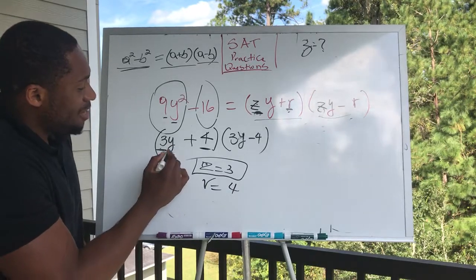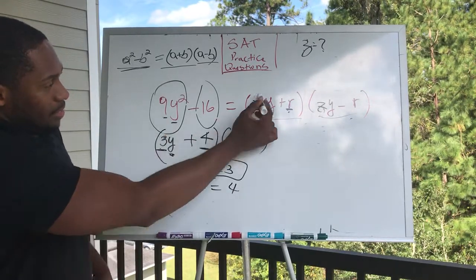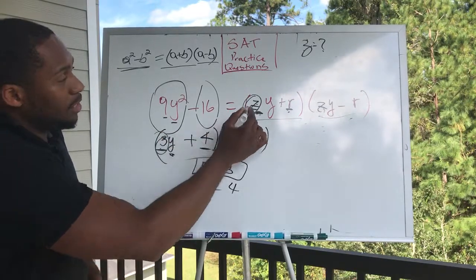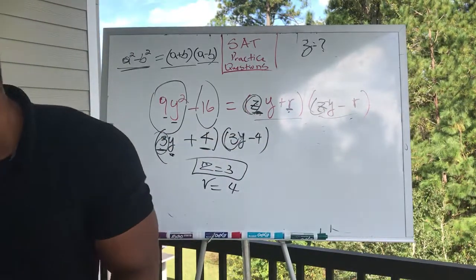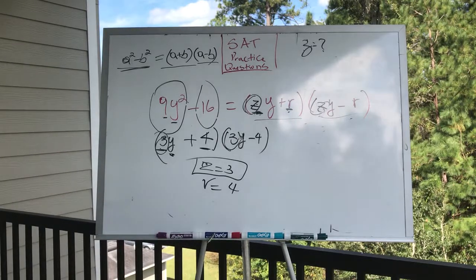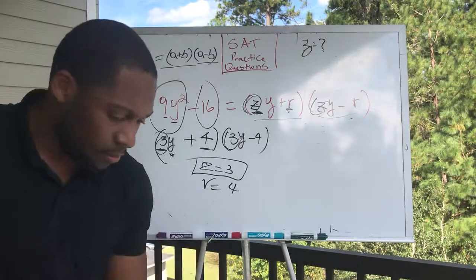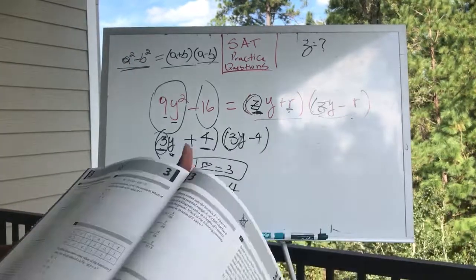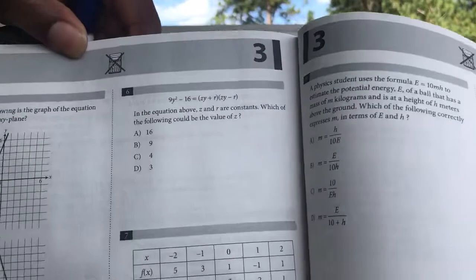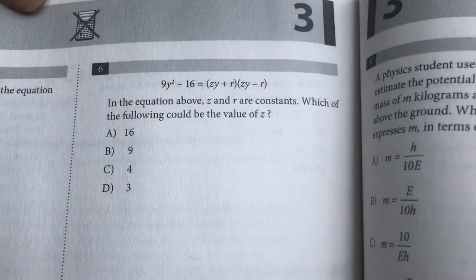Notice that the variable is Y. So the constant in front of the variable is the three. It's here and it's also here too. So this is what we're solving for. Z equals three. Let's see if we have this in the answer choices. And the answer is looking for the value of Z, choice D.